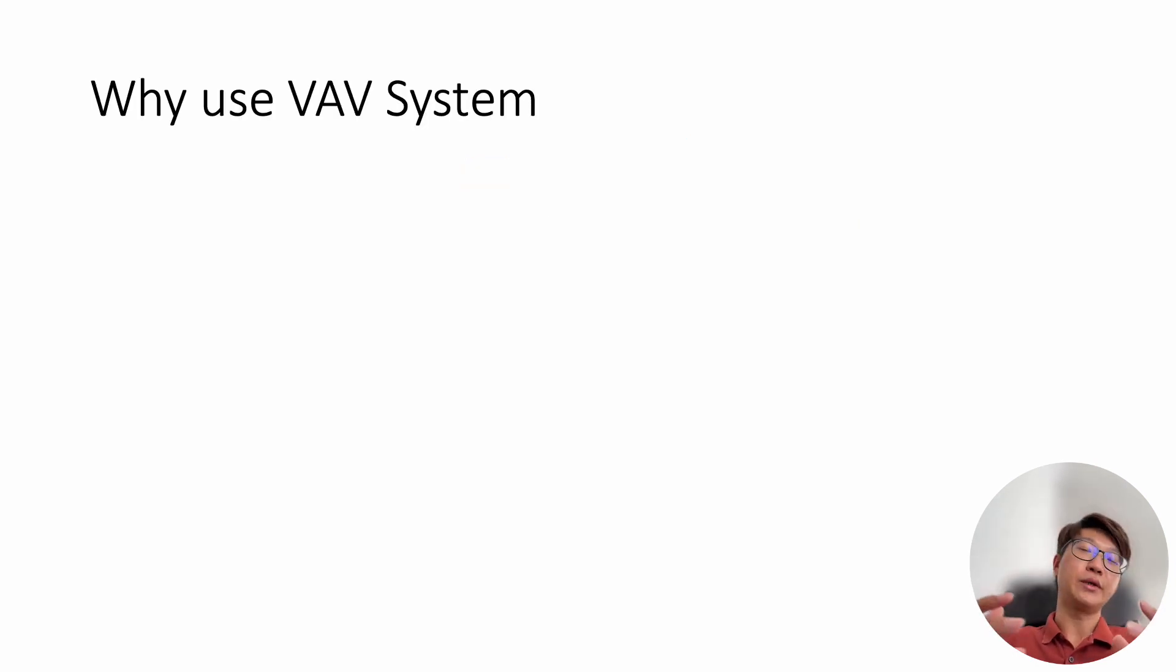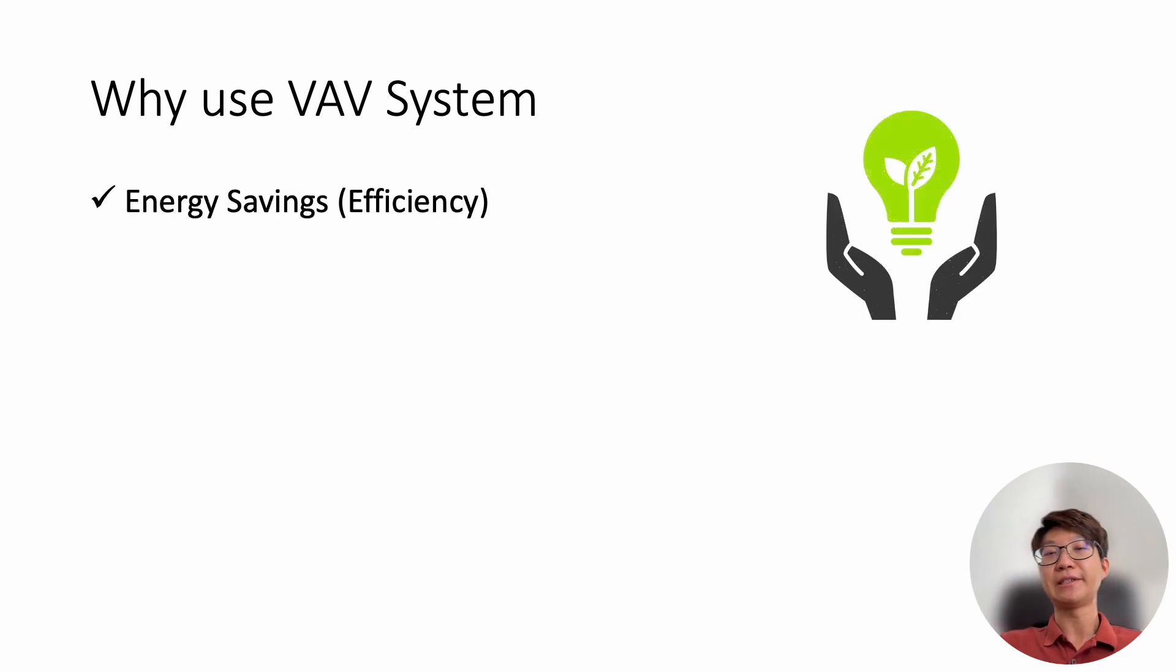So now why we want to use a VAV system? Why we want to vary the airflow? So the first thing obviously is the energy efficiency, the savings. Because traditional system, we have fixed speed. Here and there, sure, we have a few rooms that are too cold. But if you are using a traditional fixed speed system, you can't do anything. You can't reduce airflow, anything. So you just leave it too cold. Actually, you are wasting energy. So via variable air volume system, you can actually reduce the AHU fan speed. Then you save energy.